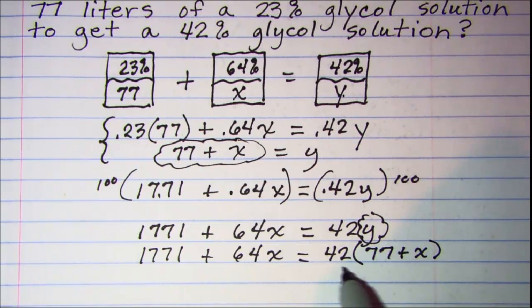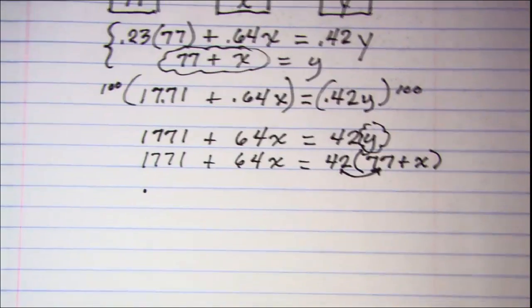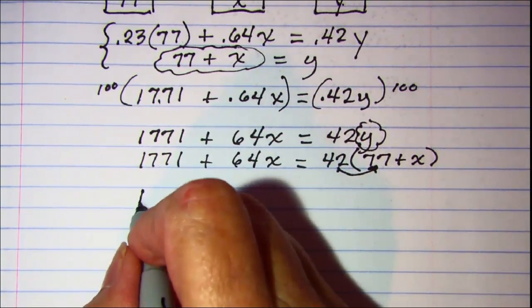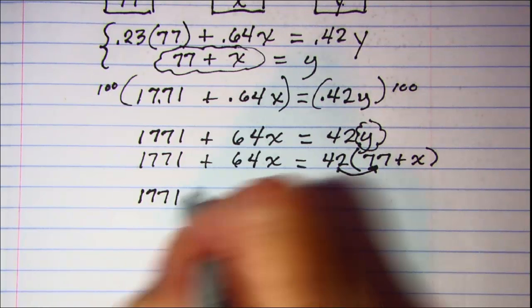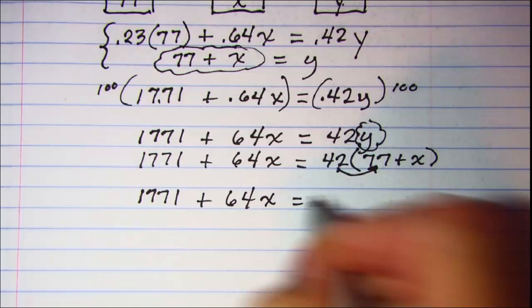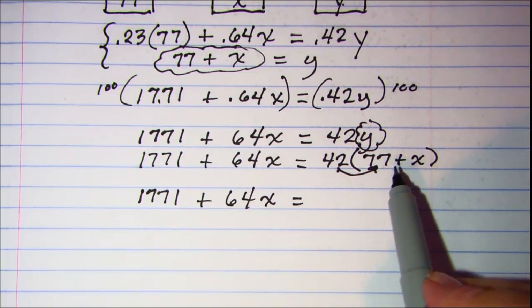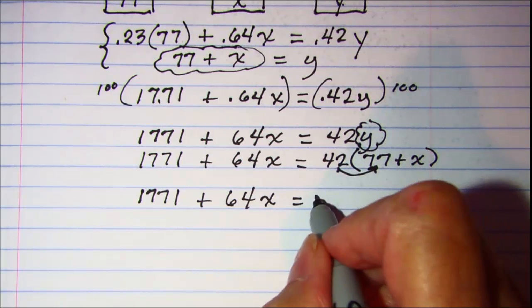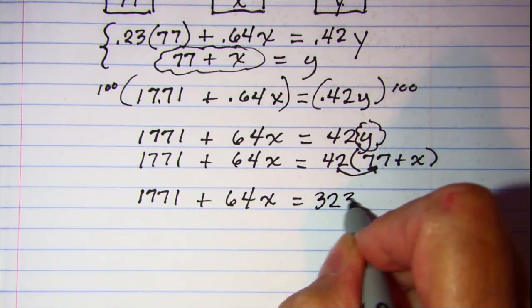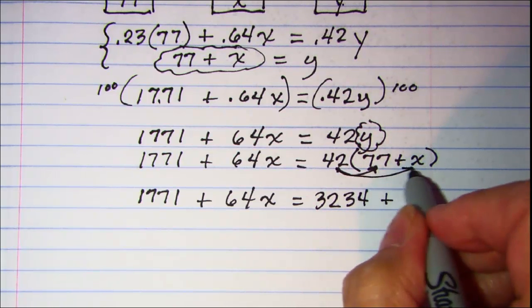Let's distribute here. I'll copy first 1771 plus 64x equals and 42 times 77 is 3234 and then 42 times x.